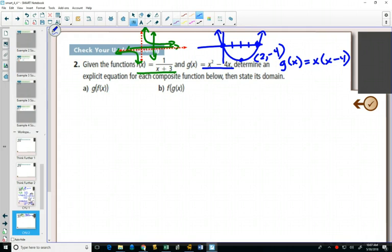Now this question does not ask us to graph those, but I'm just adding that as an extra review since we are getting close to our final exam. What this question does ask is for us to determine an explicit equation for each composite function and then find its domain. And a reminder, an explicit equation means an equation where your right-hand side is just in terms of x.